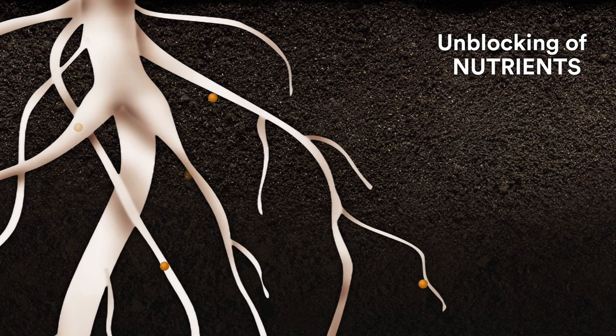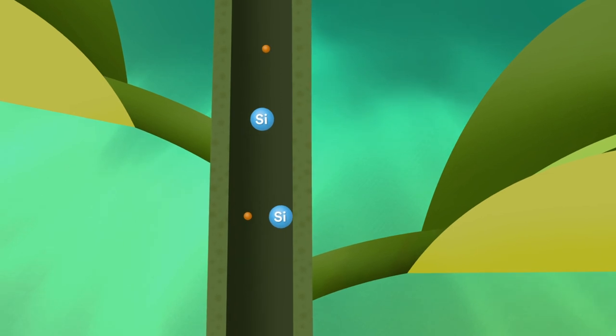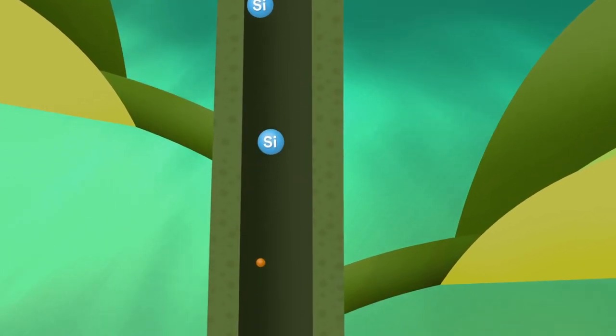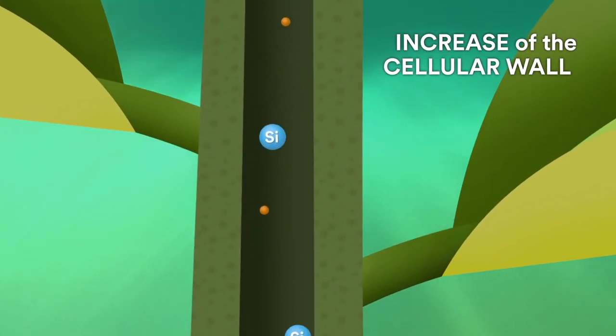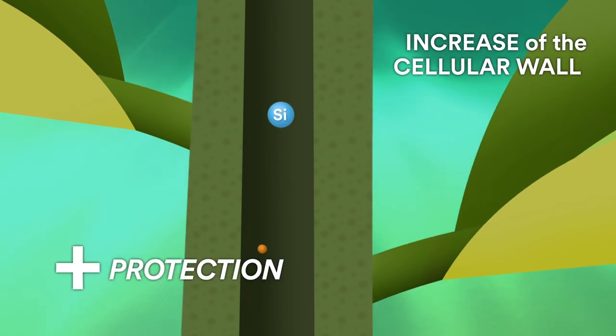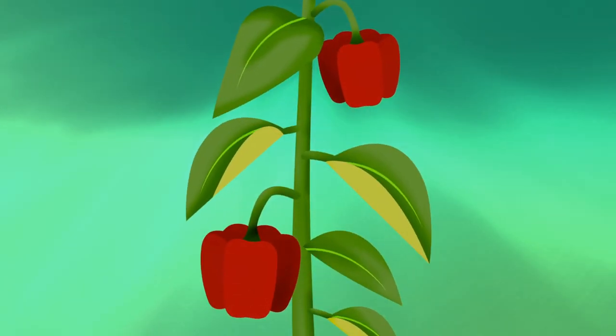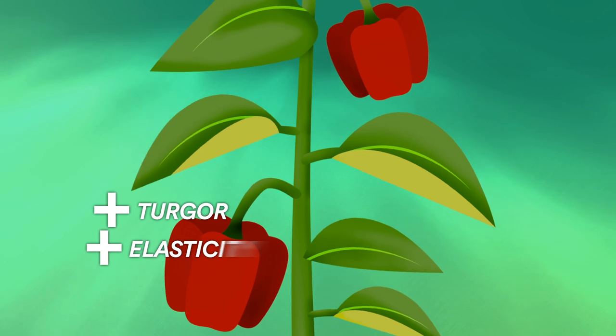Increasing the thickness of the cell wall gives greater protection to the plant by providing greater agility, elasticity, and flexibility of the cuticles and plant walls in fruits, leaves, and stems.